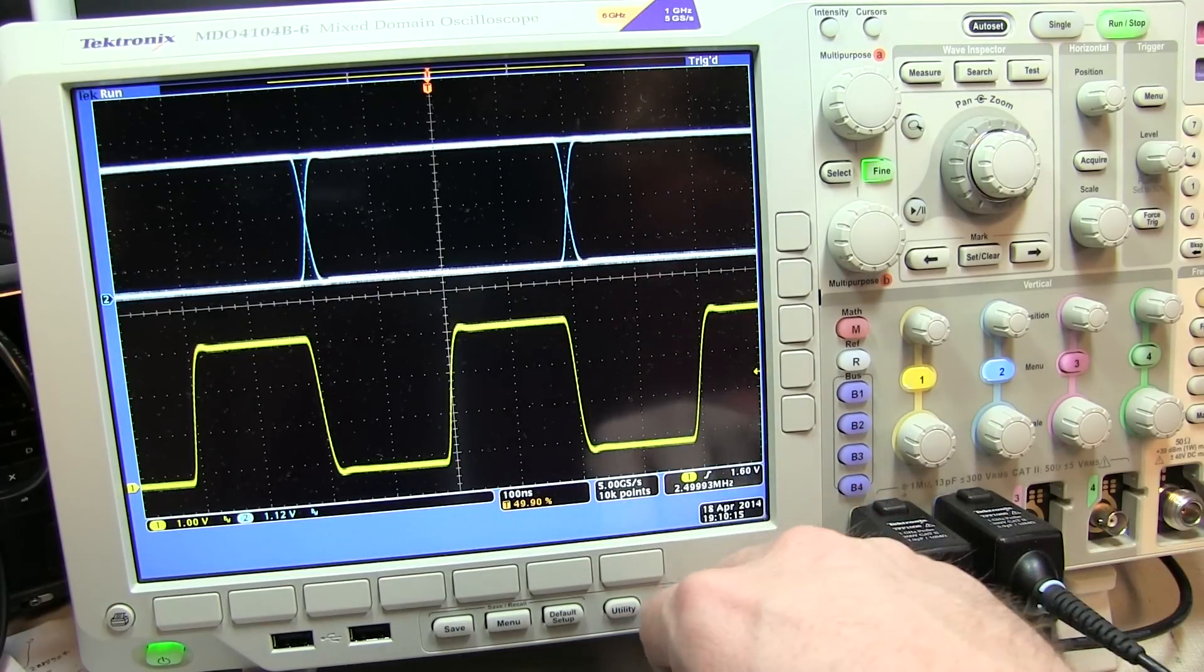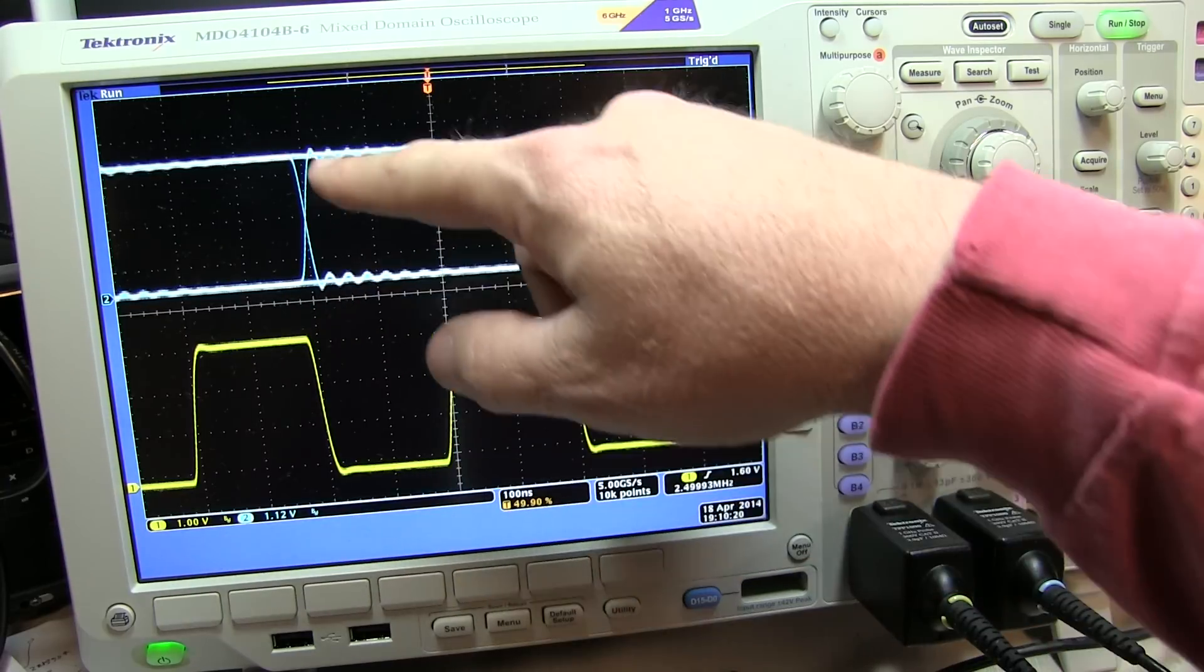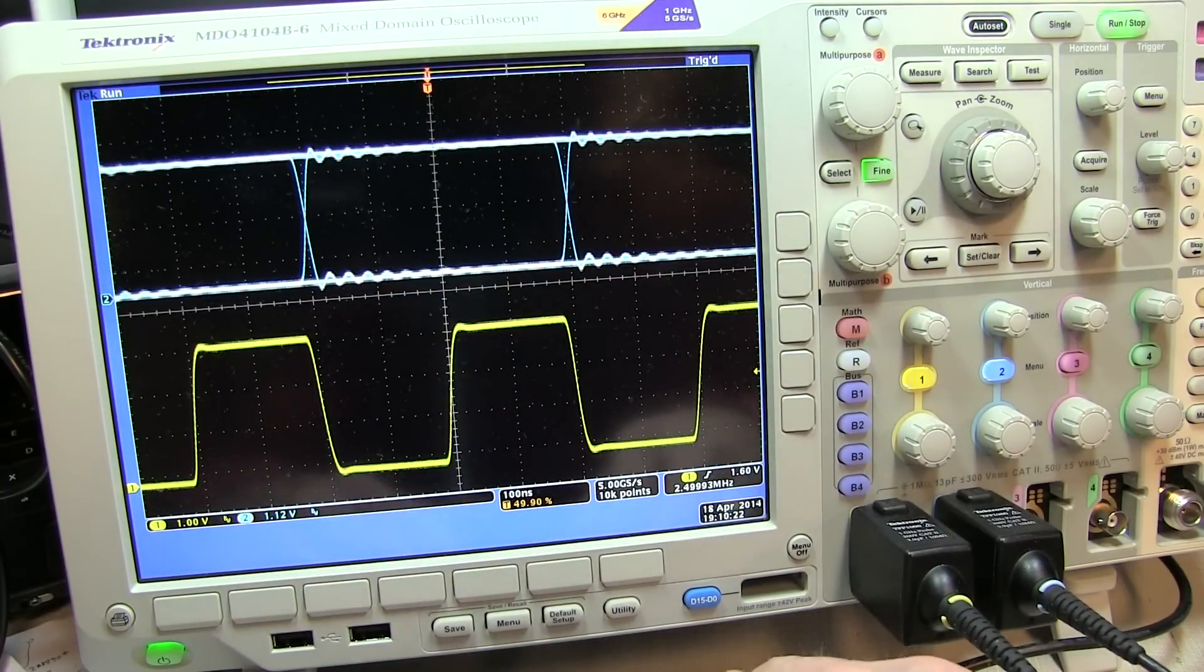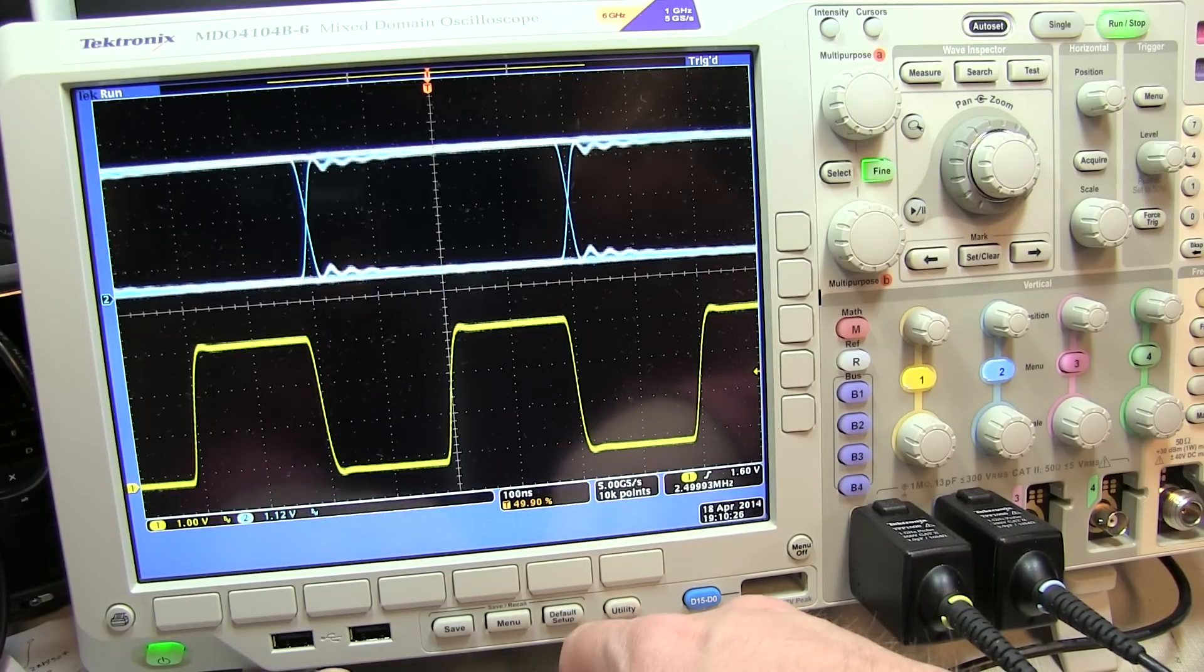Now if I do things to intentionally mess things up, like I pull my ground lead off, I see I got a little bit of ringing now here on the rising and falling edges. If I kind of put my fingers all over this thing, I can cause a little bit of droop in the waveform and start degrading that eye pattern.